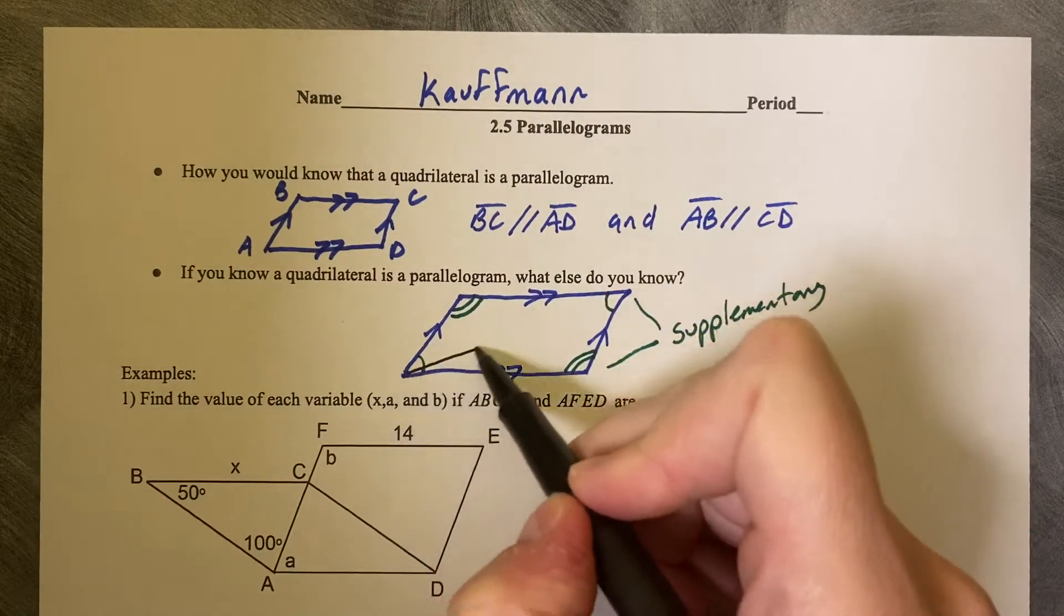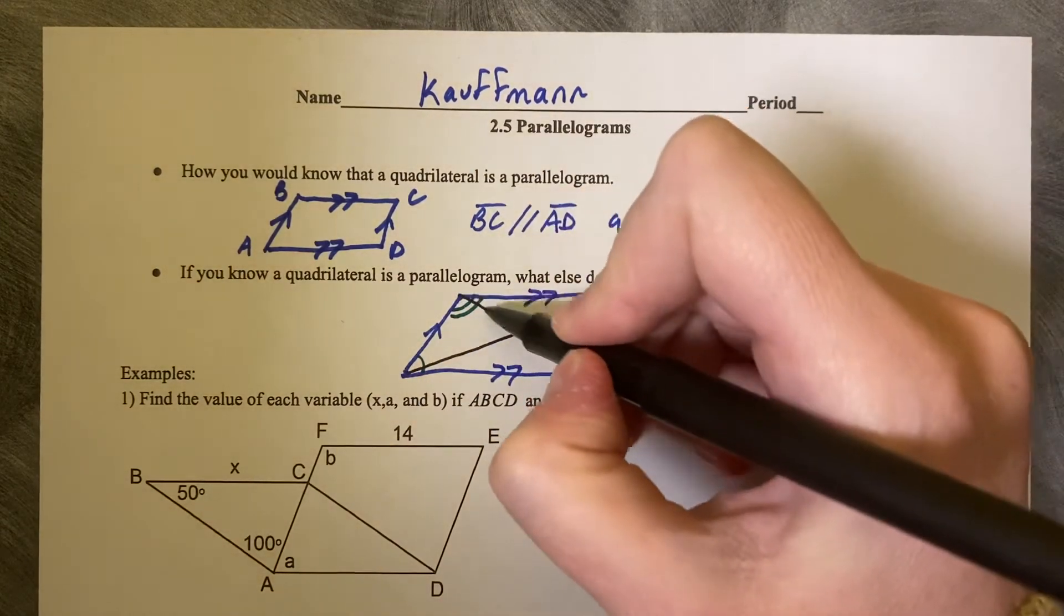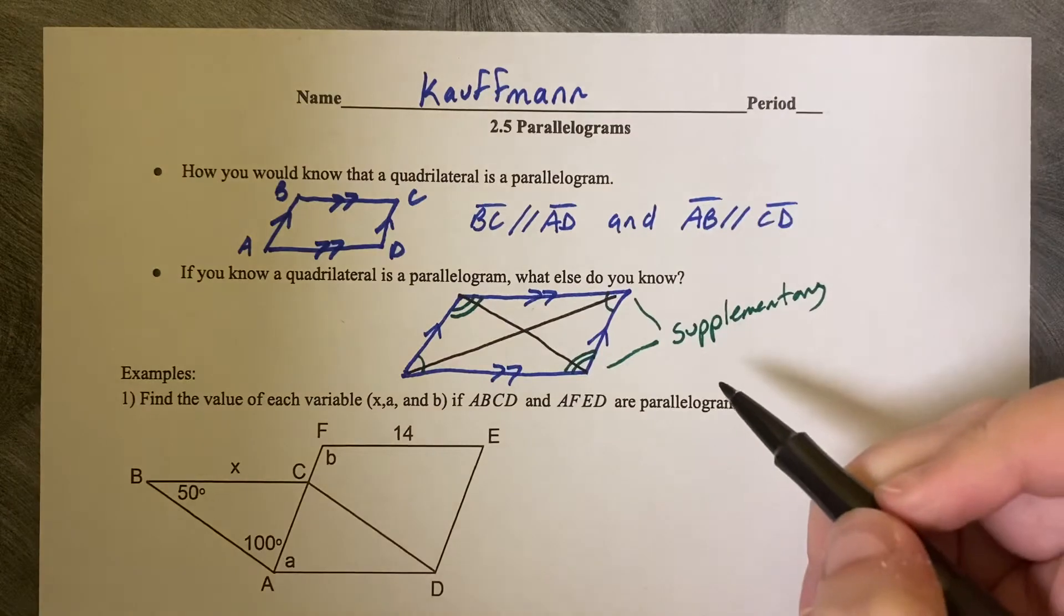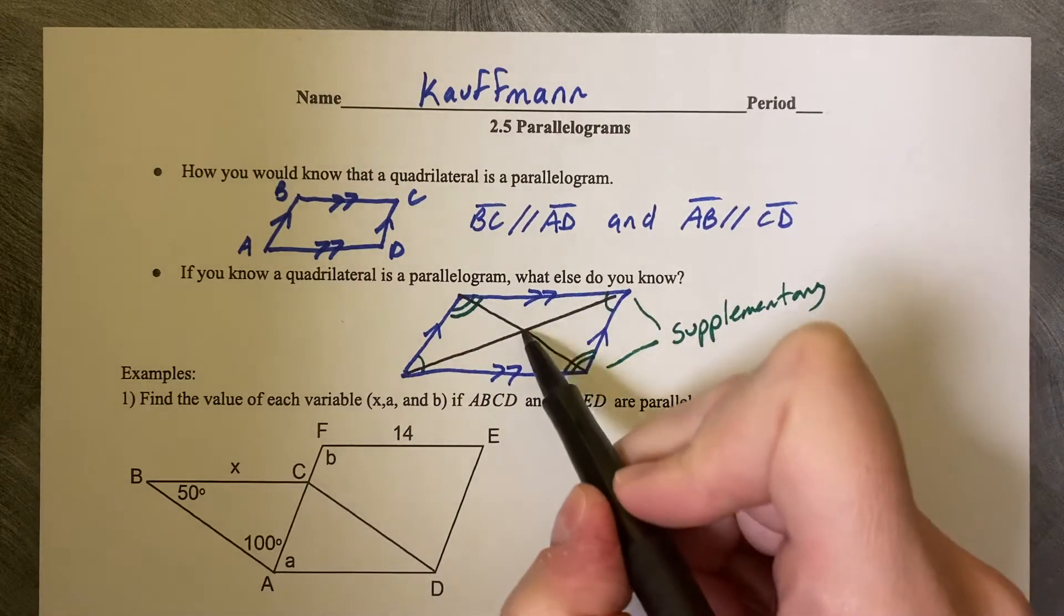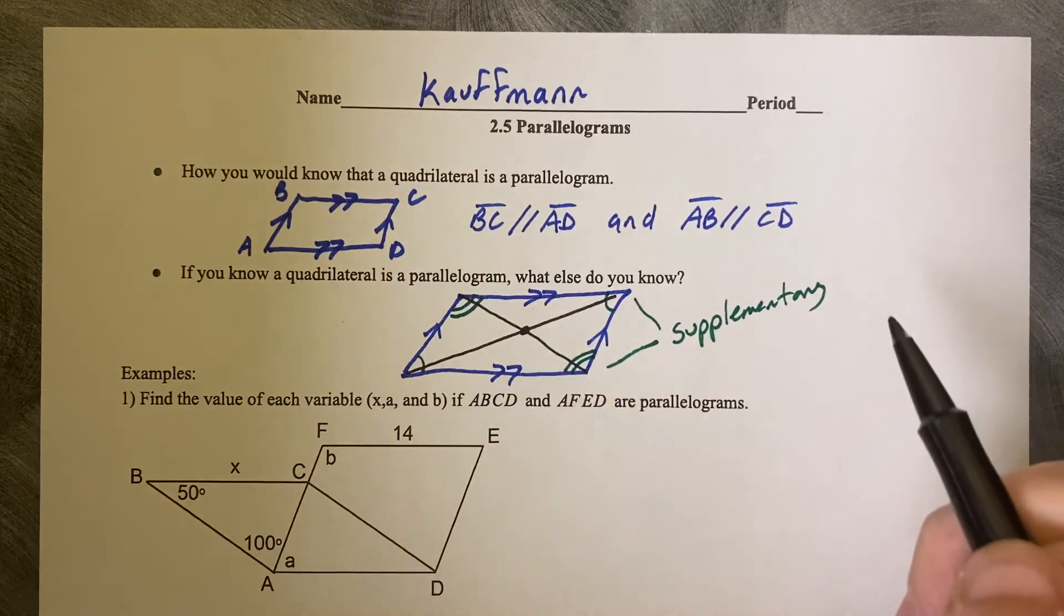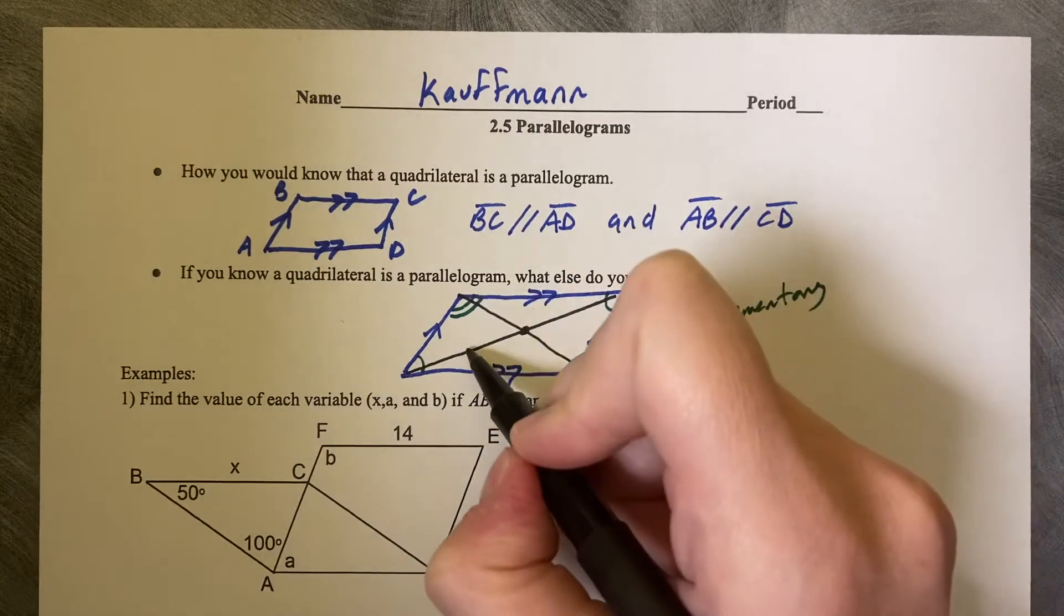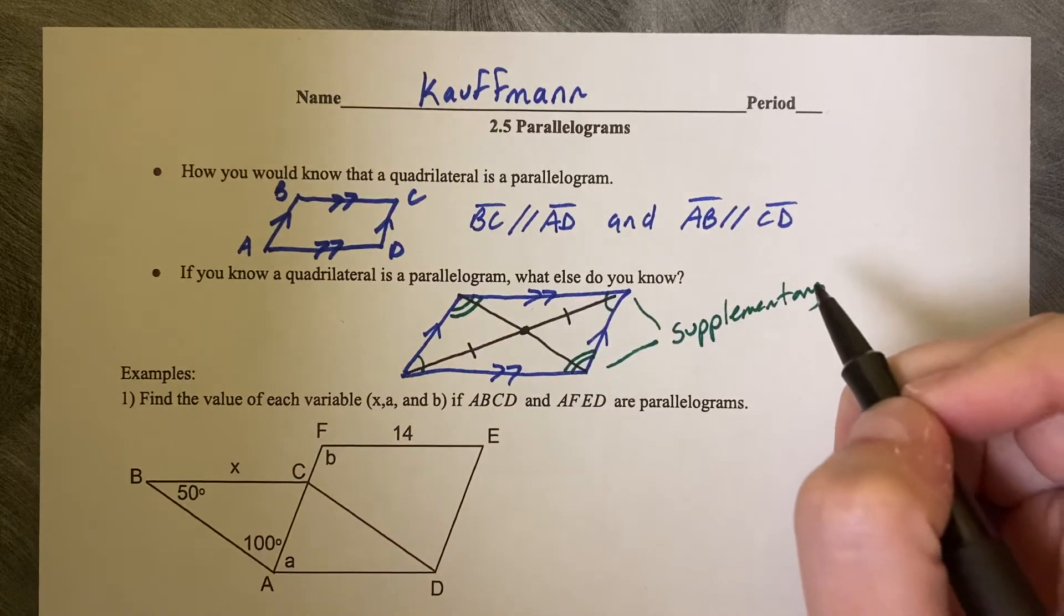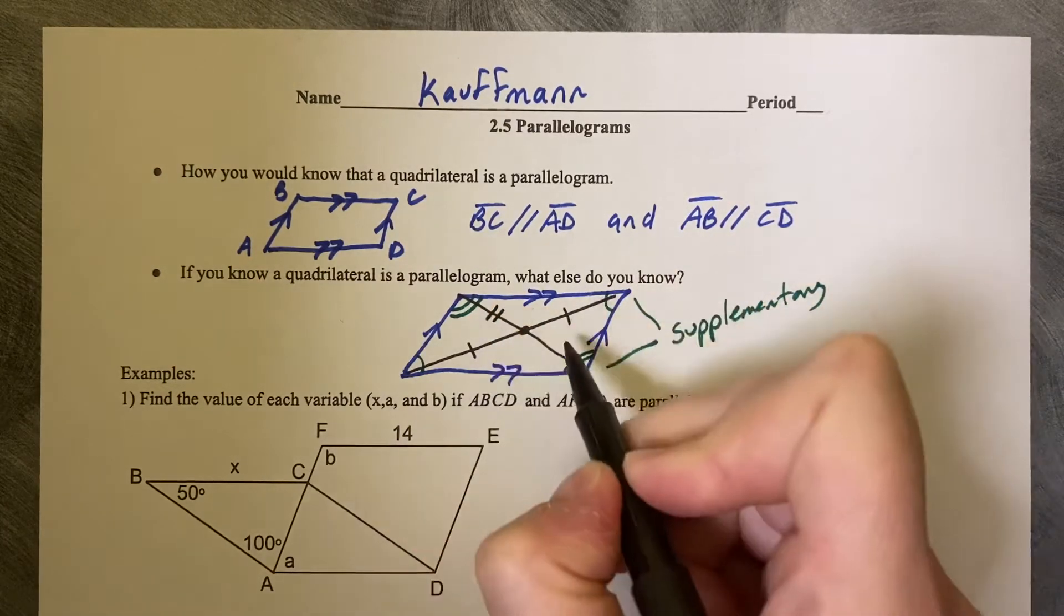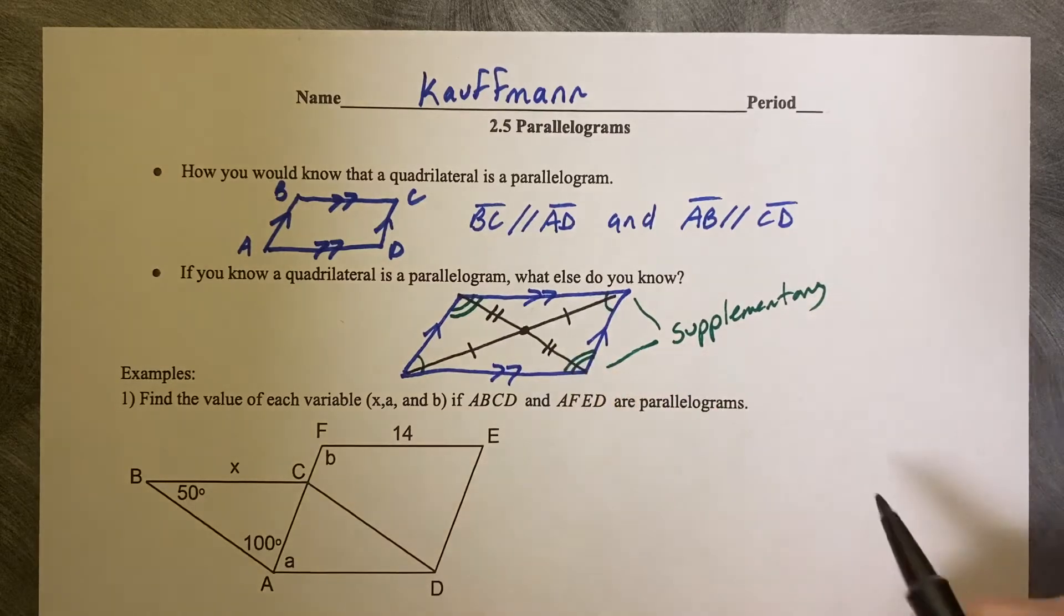Also, you know that if you draw on the diagonals, the diagonals are not the same length, but at this middle point, they bisect each other. So this long length is the same length as this long length, and this shorter length is the same length as this shorter length.